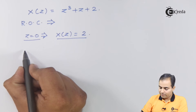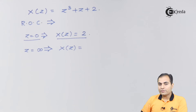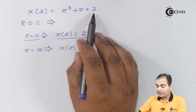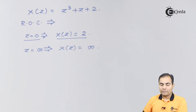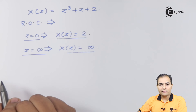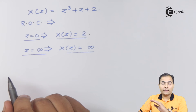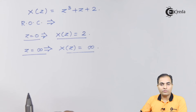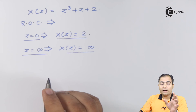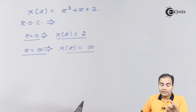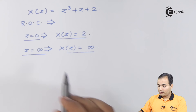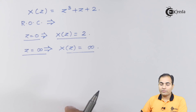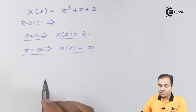If I substitute z equals infinity, the first two terms give an infinite result, and adding the constant 2 still gives infinity. So at z equals infinity we get an infinite result. The rule is: if a value of z gives a finite result, that value is part of the ROC; if it gives an infinite result, it is not. Therefore, z equals infinity is not part of the ROC, but z equals zero is.